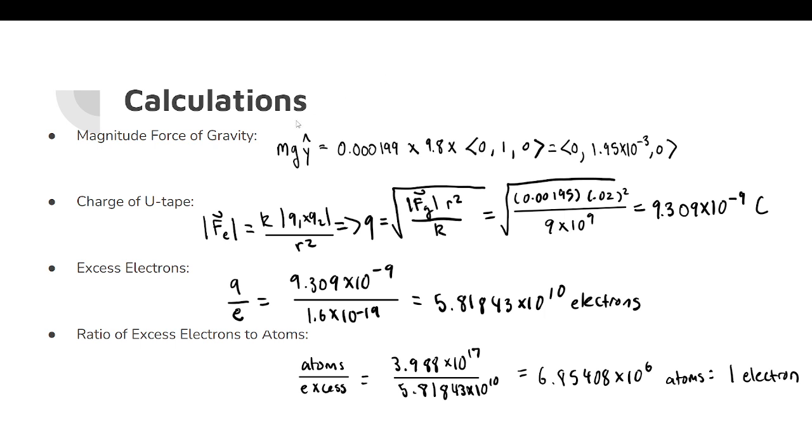So the magnitude of our force due to gravity was 1.95 times 10 to the negative 3 in the y direction. We found that the charge of the U-tape was, using Coulomb's law, 9.309 times 10 to the negative 9th Coulombs.